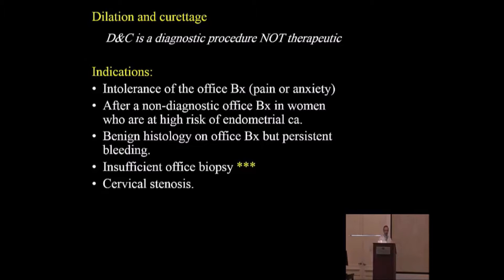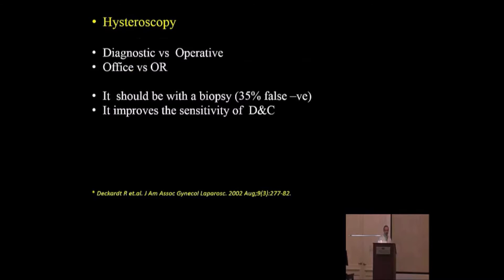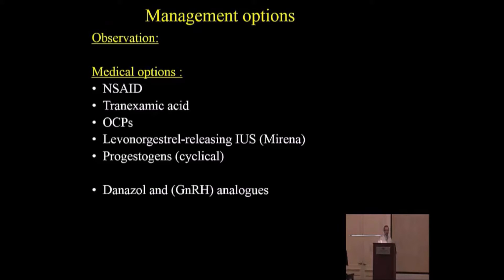Indications for DNC include patient intolerance of office biopsy, inability to perform it, or cervical stenosis — particularly in older patients where obtaining an endometrial sample can be technically difficult. Hysteroscopy can be operative or diagnostic depending on the pathology. If a polyp or myoma is found, it should be removed. Diagnostic hysteroscopy identifies isolated lesions that may be missed by DNC alone or the endometrial sampler.